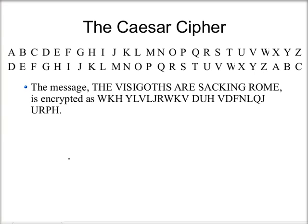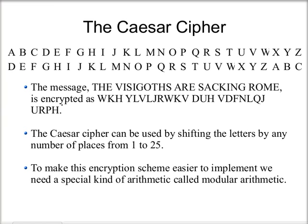So if I wanted to encrypt the message 'the Visigoths are sacking Rome,' I would go to my table and see that T would get replaced with W, H would be replaced with K, E would be replaced with H, and so on. If I did that for each letter, I would get this encrypted message. This is only for shifting by three spaces, but the Caesar Cipher can be used to shift by any number of places from 1 to 25.